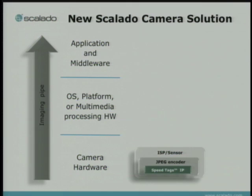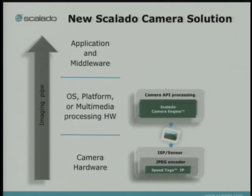So we're trying to take our responsibility within imaging and solve some of these usability problems. What we've done is we've asked hardware vendors to modify their sensors, ISPs, or even baseband processors to include a different JPEG encoder. That encoder sends modified, enhanced JPEG images to our software — the Scalado camera engine. By having those special images, we can do extremely fast processing and enable completely new use cases.